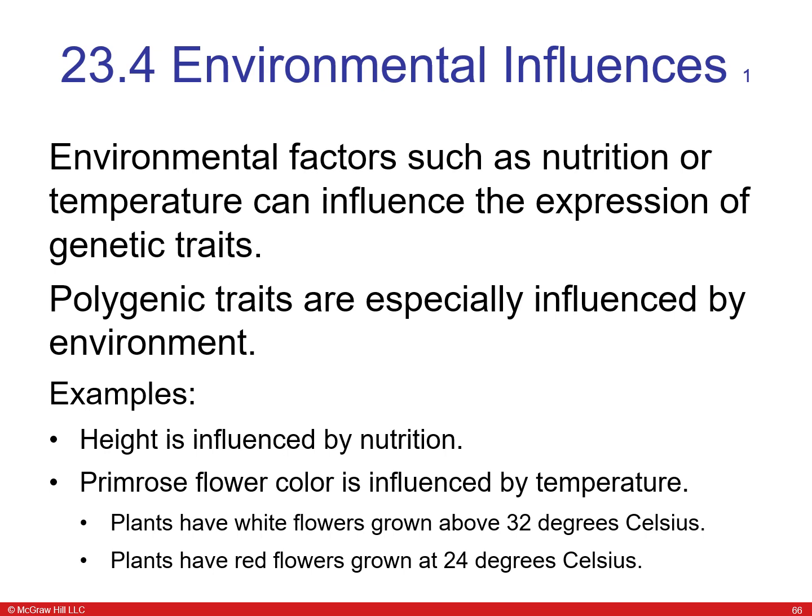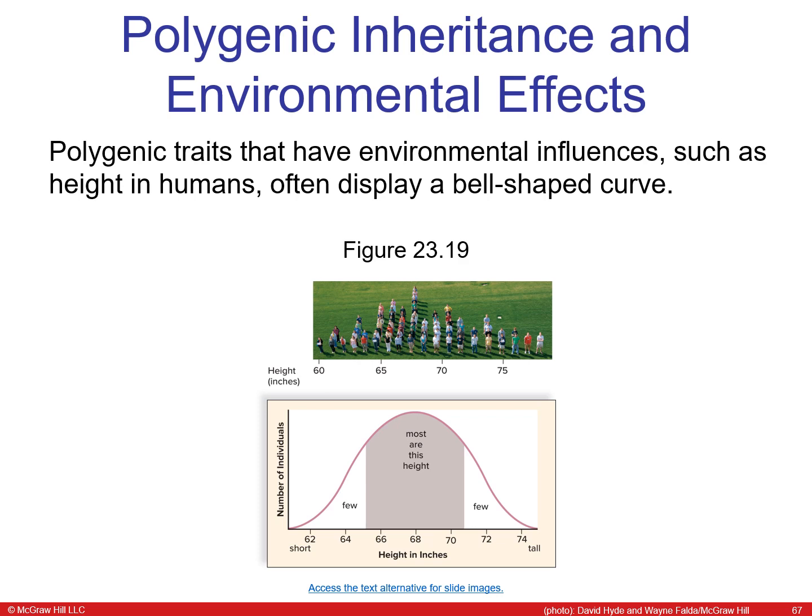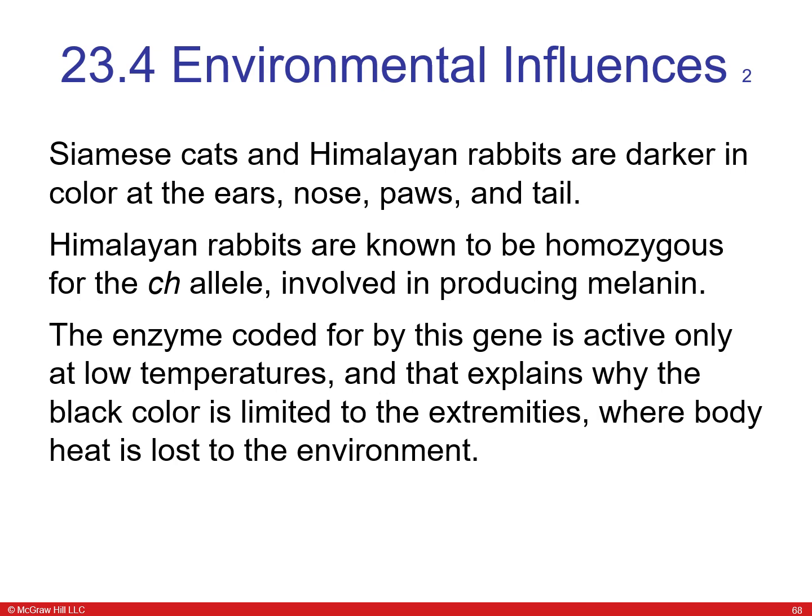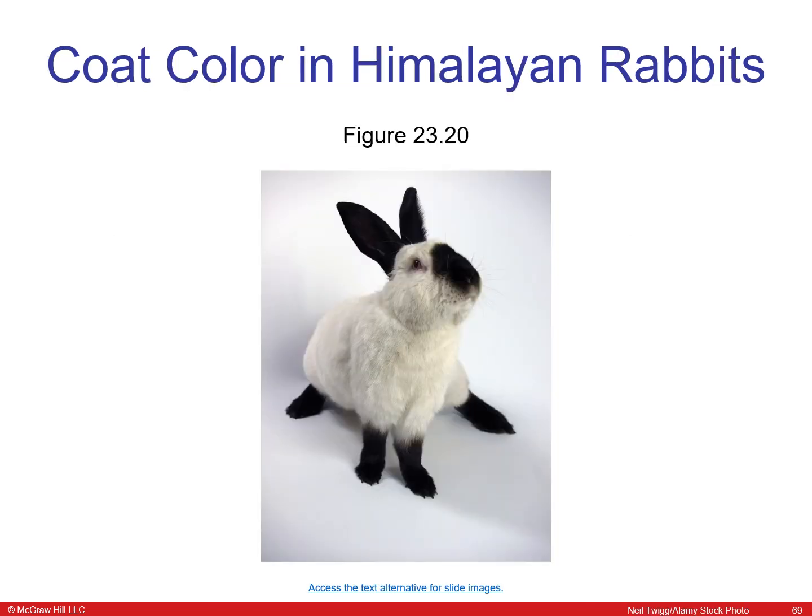Environmental factors such as nutrition and temperature can also affect the expression of genetic traits. For example, height is influenced by nutrition, and certain flower colors are influenced by temperature. Polygenic traits with environmental influences, such as height in humans, are often displayed in a bell-shaped curve — some people are short, most are medium height, and some are very tall. Siamese cats and Himalayan rabbits are darker in color on the ears, nose, paws, and tail because pigment enzymes are only active at lower temperatures found at the extremities where body heat is lost.